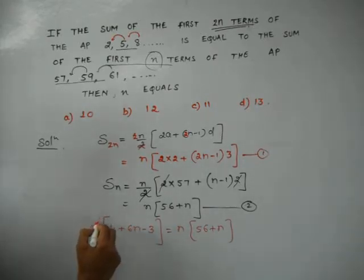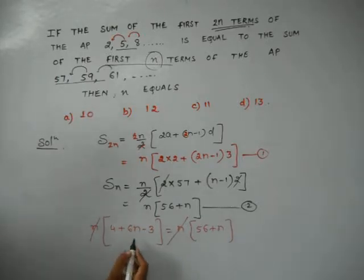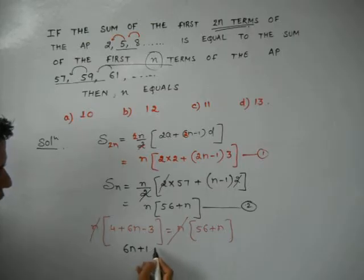So, n we can cancel out. Because we know that n cannot be equal to 0 now. So, we can cancel it. 4 minus 3 is 1. That is 6n plus 1 is same as 56 plus n.